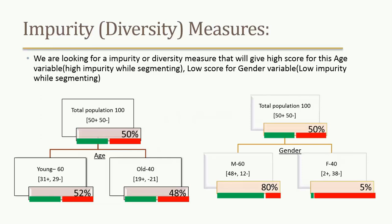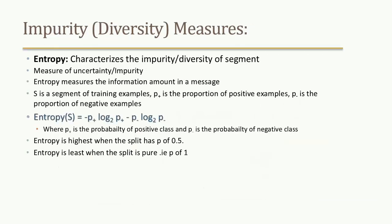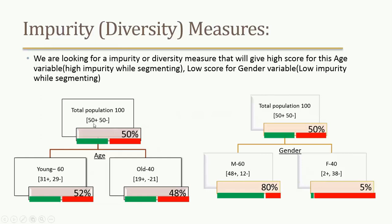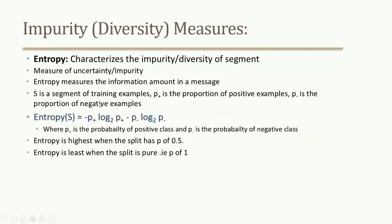We are looking for an impurity measure — is there any mathematical formula? Entropy characterizes the impurity or diversity of a segment. Entropy is a measure of uncertainty, impurity, or diversity. If S is a segment of training samples, P-plus is the proportion of positive examples and P-minus is the proportion of negative examples — for example, 50% positive at root, 52% in the young segment, 80% in the male segment.